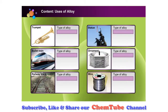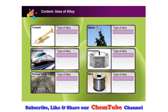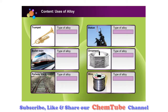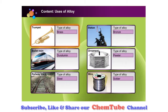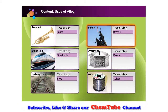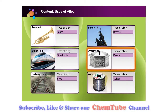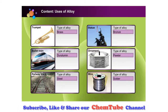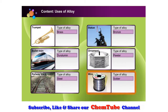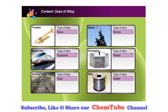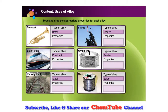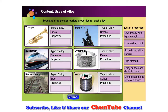We have studied the properties of some alloys. Do you realize that we use items made of alloys according to our needs and purposes? Which alloys are these items made of? The musical instrument trumpet is made of brass, statues are usually made of bronze, the body of the bullet train is made of duralumin, decorative ornaments are made of pewter, railway tracks are made of steel, and solder is used to bind wires of an electrical circuit. Drag and drop the properties of the alloy to suit the purpose of the item.